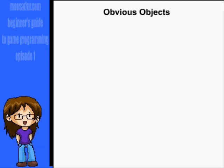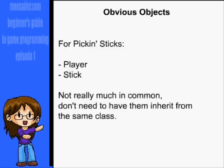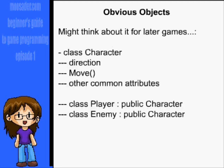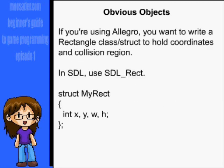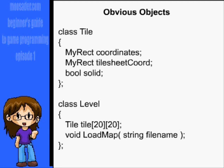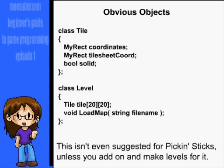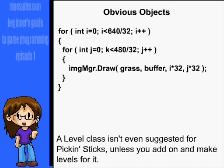Obvious objects in our game are the sort of things you immediately think about as objects — the player, any characters, the items, and the level. The player and stick classes won't really have enough in common to warrant inheriting from a base object class, but you might think about this for later games, such as having a base character class with player and enemy classes inheriting from that. Level classes are generally made up of an array of tiles, each with coordinates and a rectangle to hold its position on the tile sheet. You might also have a boolean to tell whether it's solid or not. For Pick and Sticks, I probably wouldn't even write a level class — I would just write a couple of for loops to draw grass tiles all over the background.